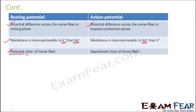Resting potential refers to the polarized state of a nerve fiber — when the neuron is not conducting any impulse, the inner side of the membrane is negatively charged and the outer side is positively charged; that is the polarized state. Whereas action potential is in a depolarized state, because now the polarity gets reversed, and that action potential keeps moving from one region to the neighboring region.